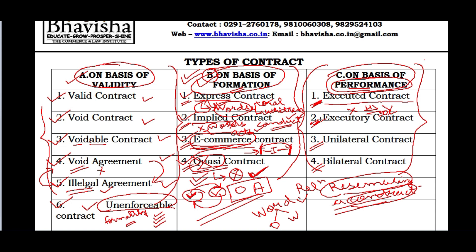Executory contract is where one or both parties still have their work remaining - it has not yet become executed. The execution will be completed in the future, whether one party's work is pending or both parties' work is pending. Executed contract means all parties have performed their obligations and nothing remains. Executory contract means one or both parties still have their work to do - that will be classified as an executory contract.